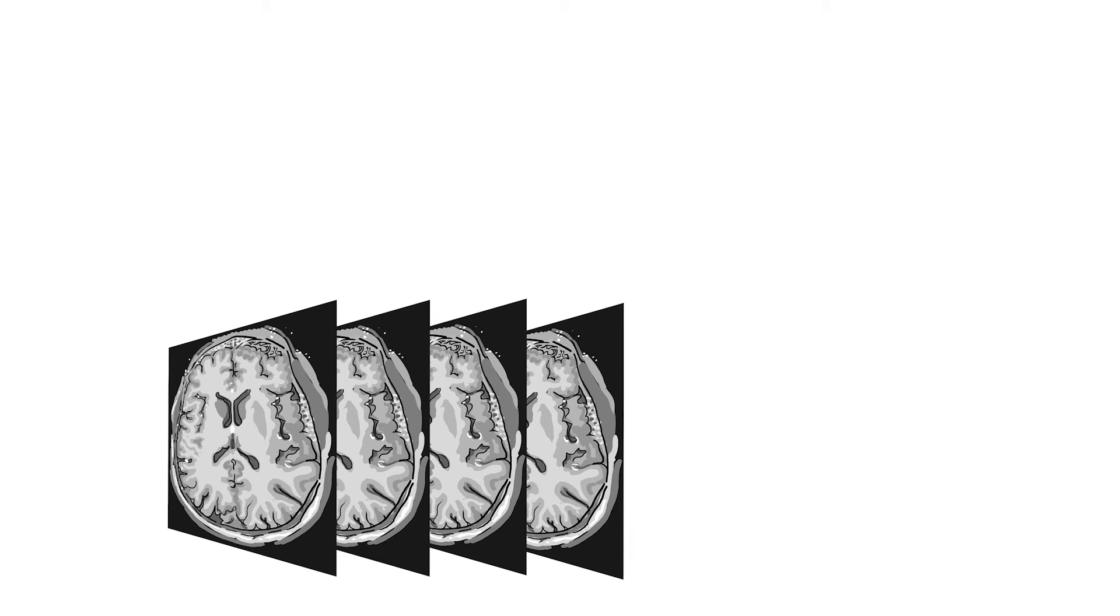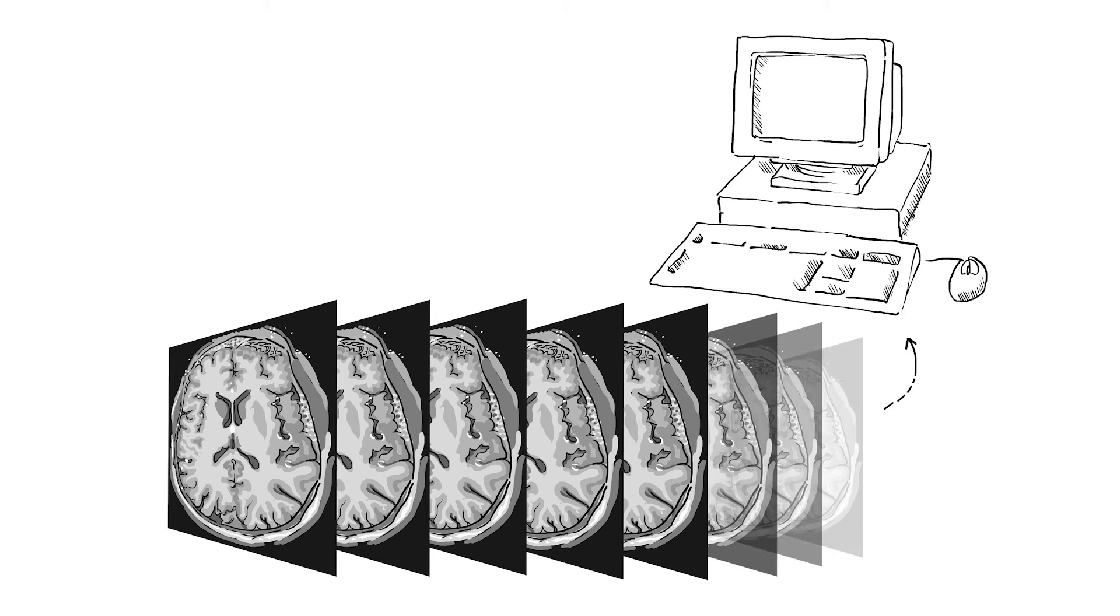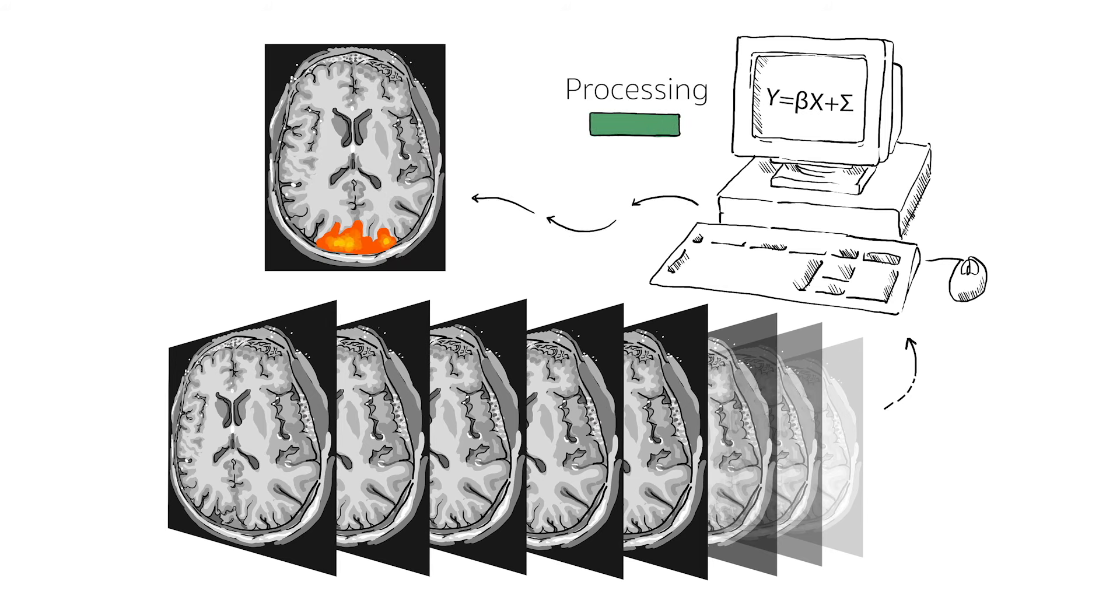In functional MRI, lots of images of the brain are taken very quickly. The images are then processed on a computer. This creates a map showing how brain activity changes when the brain is doing different things.